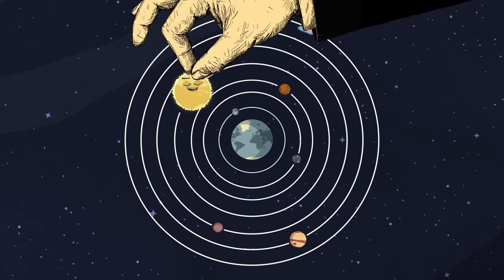My name is 55 Cancri e, also known as Janssen. I'm a super Earth — an exoplanet in the orbit of my host star named Copernicus. I was discovered on August 30, 2004. I was nicknamed the diamond planet due to research suggesting a carbon-rich composition underneath my surface. I was discovered by astronomer Barbara McArthur using the radial velocity detection method. My host star is about 40 light years from Earth.